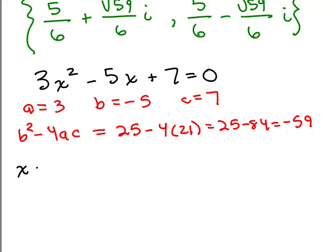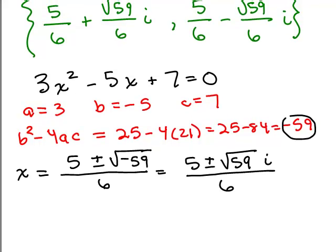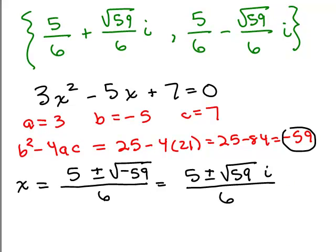So the quadratic formula says the answer is the opposite of b, since b is negative 5, that'll just be 5, so that'll be positive 5 plus or minus the square root of whatever I just found b squared minus 4ac to be, so it's going to be the square root of negative 59, all over 2a, and since a is 3, 2a is 6. And of course, we don't leave a negative underneath the square root, so that would be 5 plus or minus square root of 59i over 6, which could also be written as the way I have it right here.